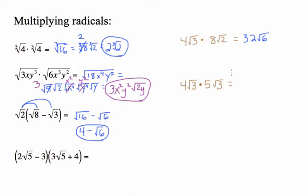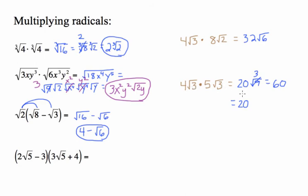For 4 root 3 times 5 root 3: put the regular numbers together (4 times 5 is 20) and the roots together (root 3 times root 3 is root 9). Root 9 is just 3, so we have 20 times 3, which is 60. The shortcut: root 3 times root 3 is the same as root 3 squared — squaring a square root undoes each other — so you just get 3, giving 60.